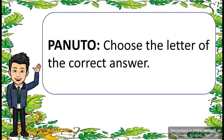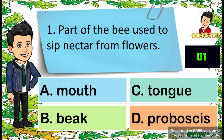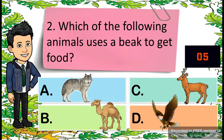For your last activity, choose the letter of the correct answer. Number one: parts of the bee used to sip nectar from the flower. A, mouth. B, beak. C, tongue. D, proboscis. Number two: which of the following animals uses a beak to get food? A, wolf. B, camel. C, deer. D, eagle.